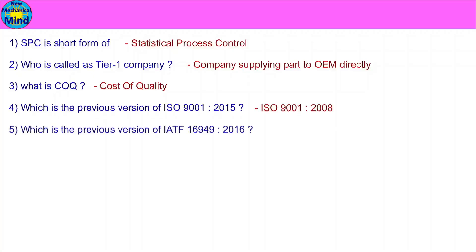Which is the previous version of IATF 16949:2016? The previous version is ISO TS 16949:2015.